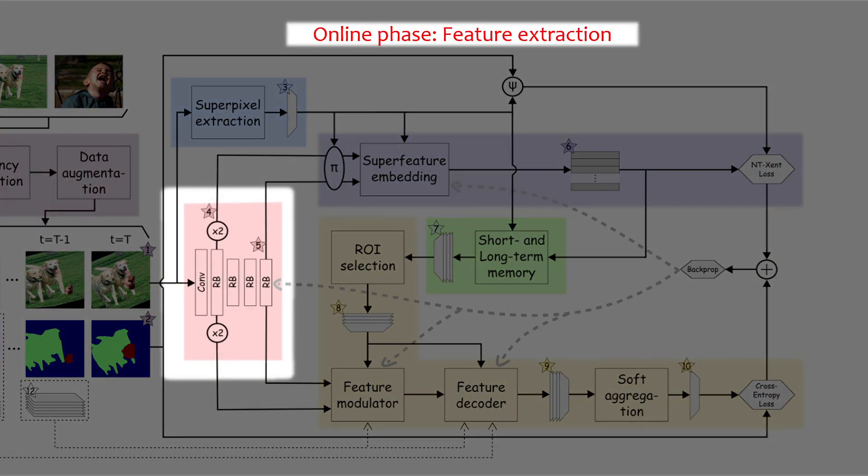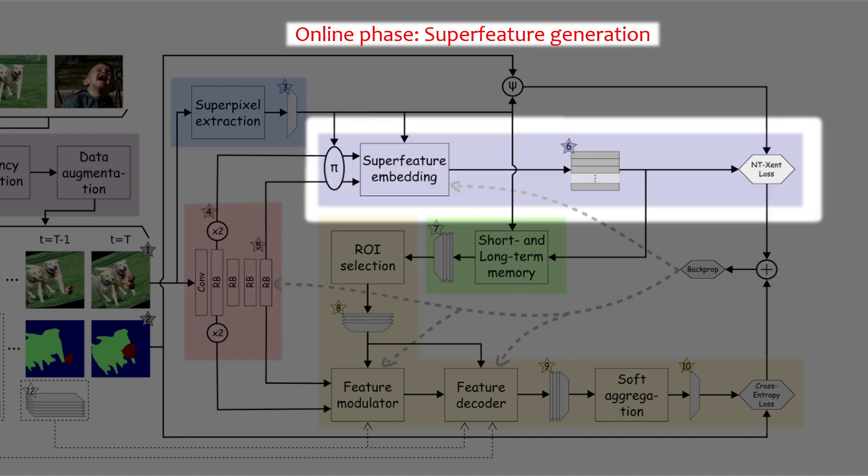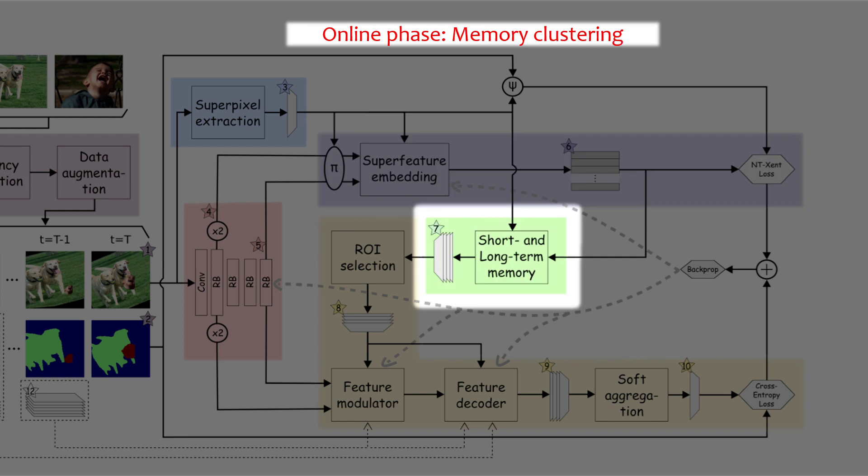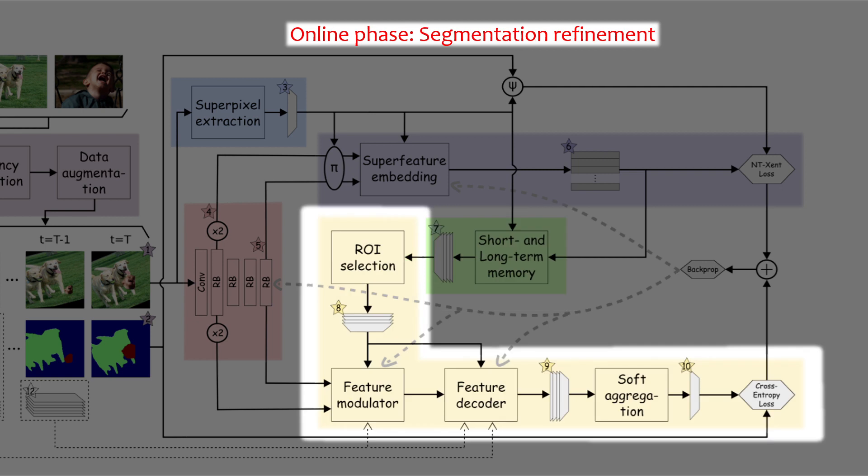At the online stage, we start by extracting convolutional features from the frames. Next, we use our Super Feature Embedding Model to generate the super features. Our memory cluster mechanism is used to store the super features along the frames. We then use past and current information to produce refined object segmentation.